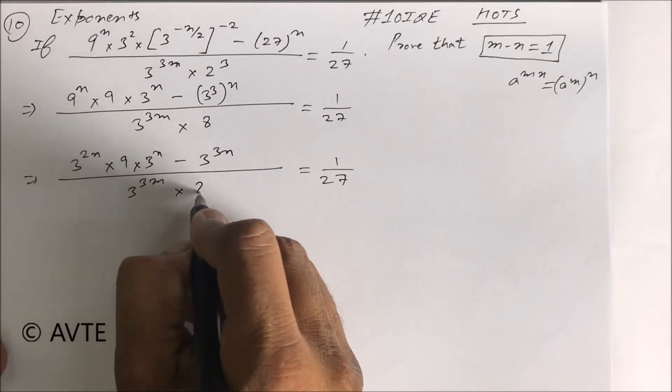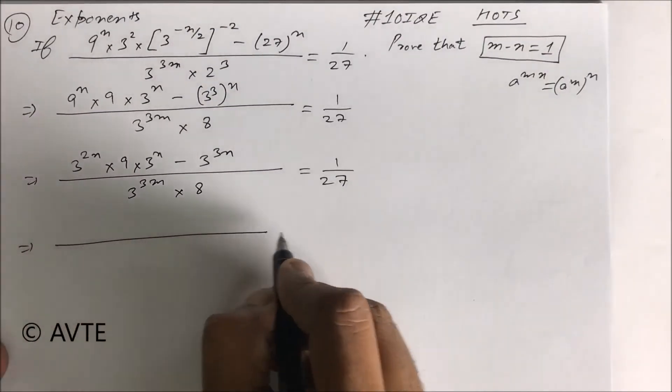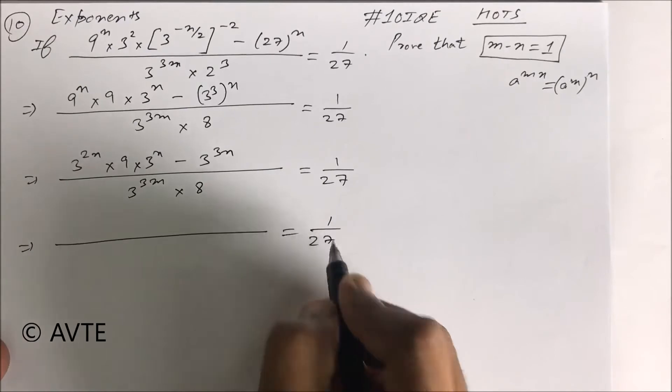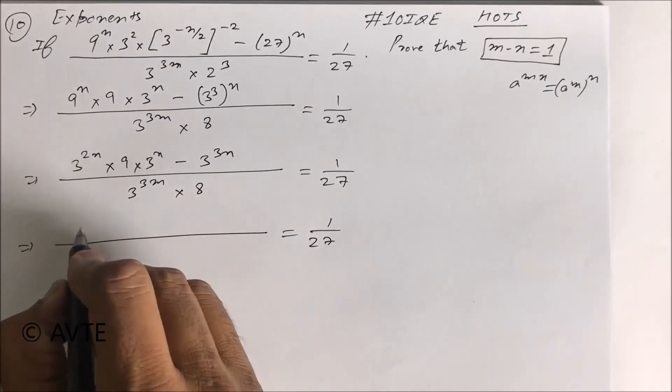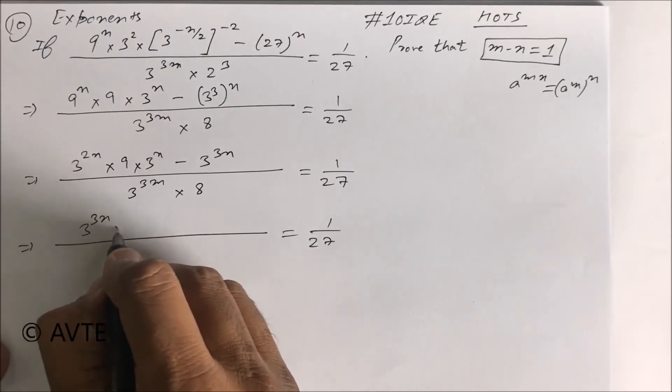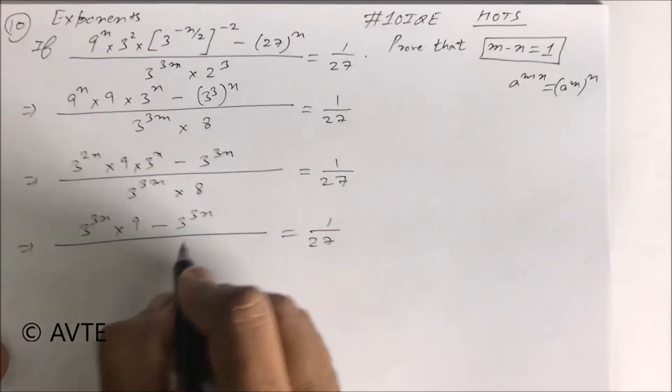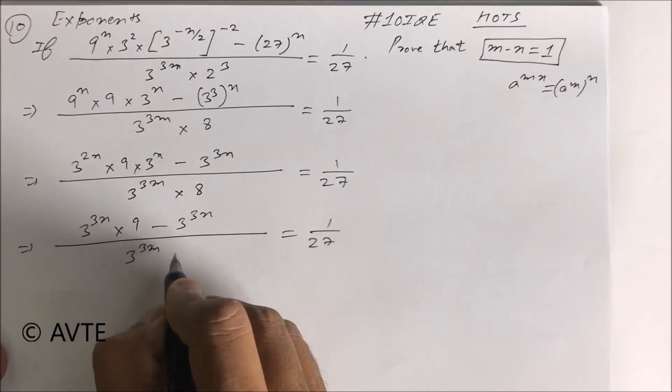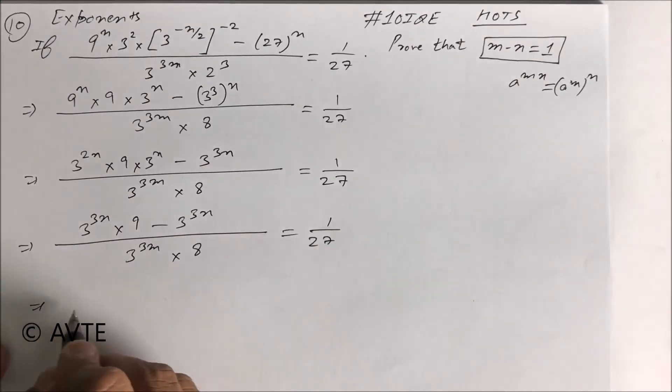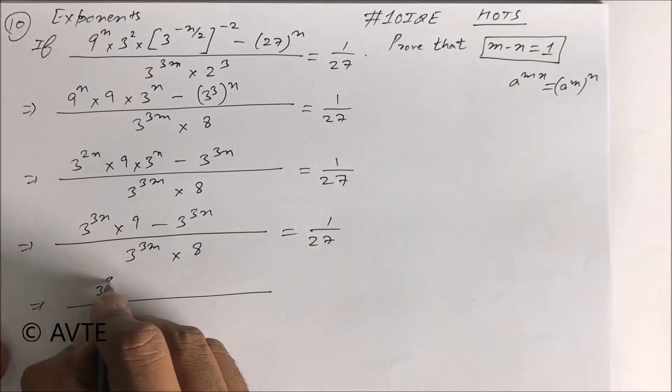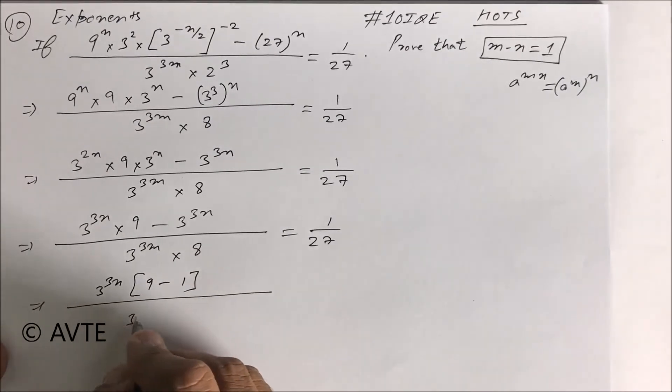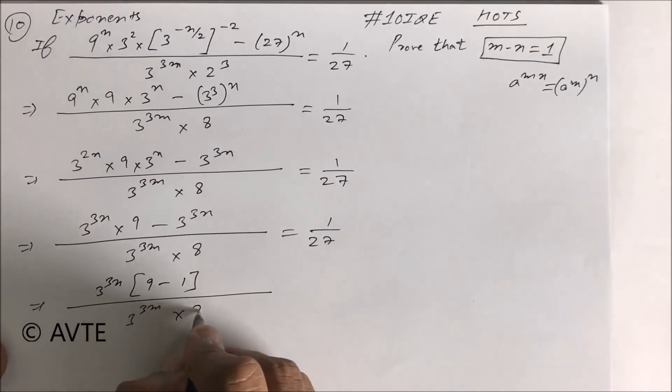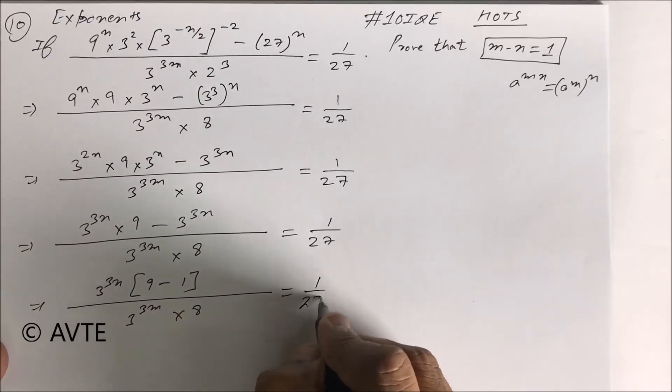Minus 3 raised to power 3m into 8. So we can take 3 raised to power 3n common. This is 9 minus 1. This is 3 raised to power 3m. Here be careful, into 8 is equal to 1 upon 27.